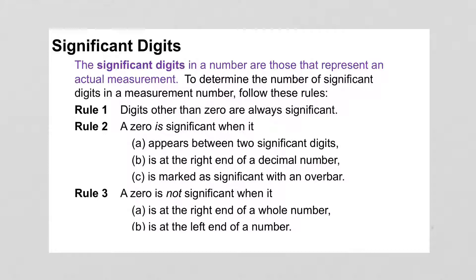Here are your three rules. First, digits other than zero are always significant. Rule 2 says a zero can sometimes be significant — when it appears between two significant digits, like 304, that makes the zero significant. Or if it's at the right end of a decimal number. Or marked with an overbar, indicating it's repeating, also makes it significant.